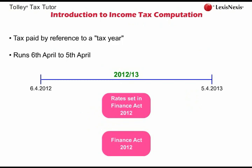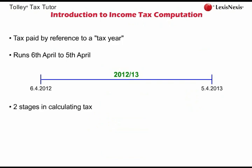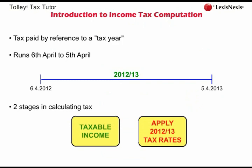There are two stages in calculating an individual's tax liability. First, we need to arrive at an individual's taxable income from all sources in the relevant tax year. Having arrived at taxable income, we then apply the 2012-13 tax rates and allowances to that income to arrive at the tax liability for the year. This tax will then be collected by HMRC under the self-assessment system.